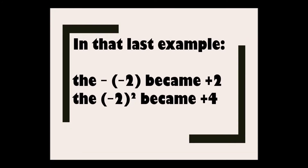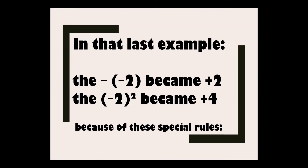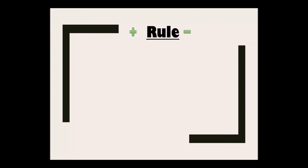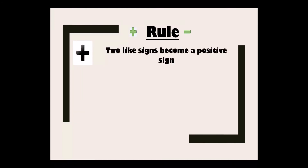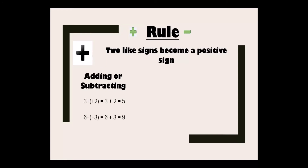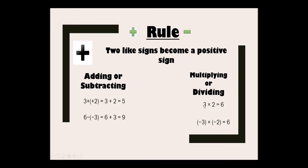In that last example, minus (−2) becomes plus 2, and (−2)² becomes plus 4 because of special rules. The rule is: two like signs become a positive sign. For adding or subtracting: 3 plus (+2) becomes 5, and 6 minus (−3) becomes 6 plus 3, that is 9 — so minus minus becomes plus, and plus plus becomes plus. For multiplying or dividing: plus 3 into plus 2 becomes 6, and minus 3 into minus 2 also becomes 6 — again, minus minus becomes plus.